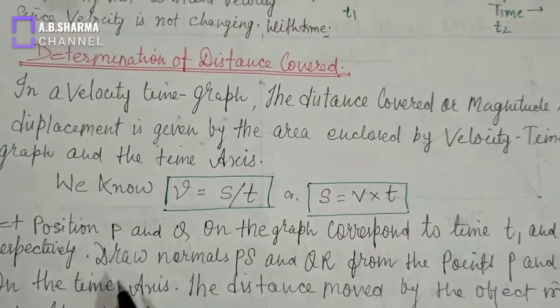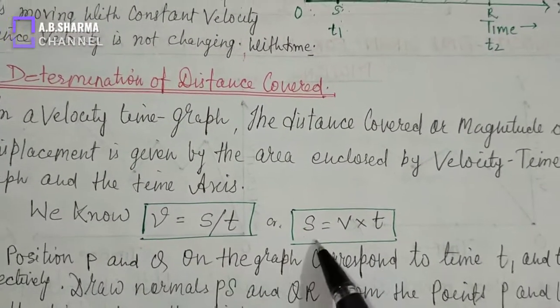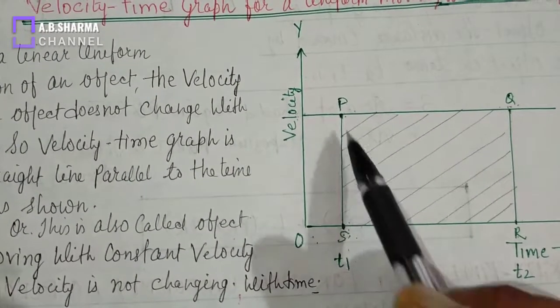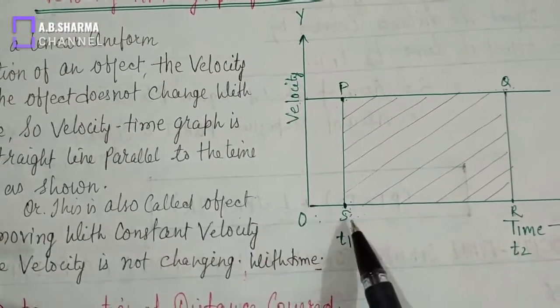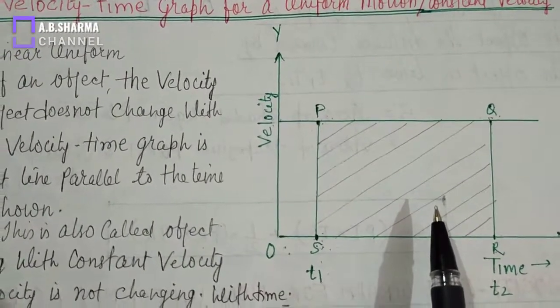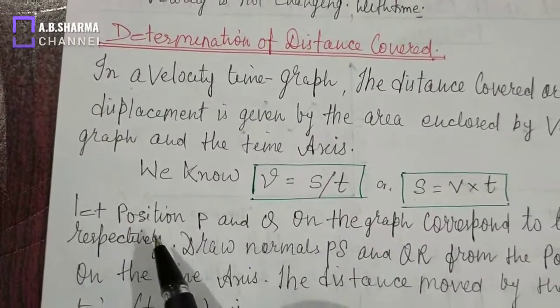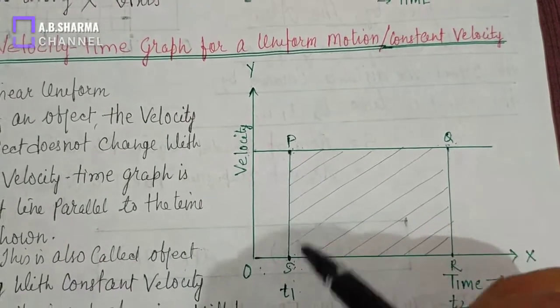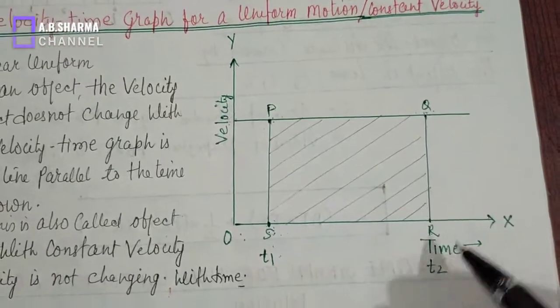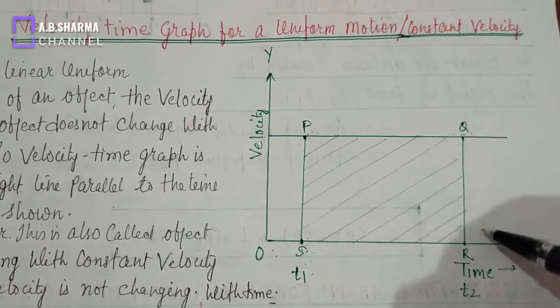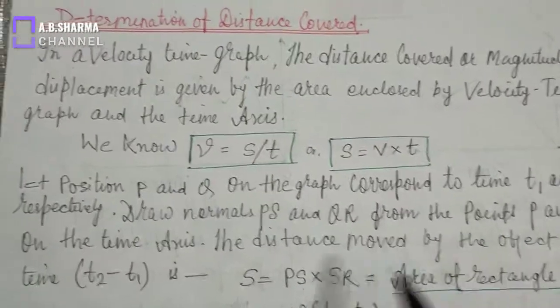Let us see this in the graph. We know velocity equals distance divided by time, so distance equals velocity multiplied by time. SP will be the velocity and SR will be the time taken. Let positions P and Q on the graph correspond to times T1 and T2 respectively. At time T1 the object is at position P, and at time T2 the object is at position Q. Draw normals PS and QR from points P and Q onto the time axis.